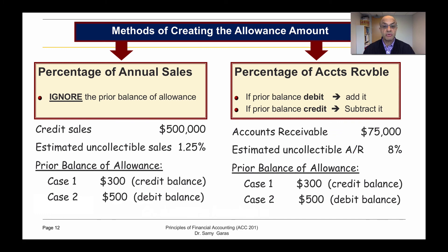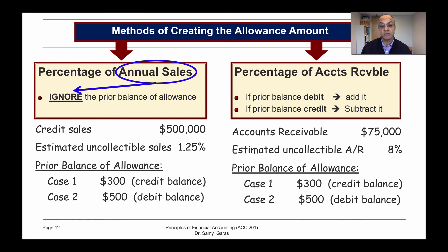Now, what are the methods we can use to create the allowance? First, we can use the annual sales. If we decide to use annual sales, we need to ignore the prior balance in the allowance account. Or we might use accounts receivable, and in this case we have to consider the prior balance of the allowance.